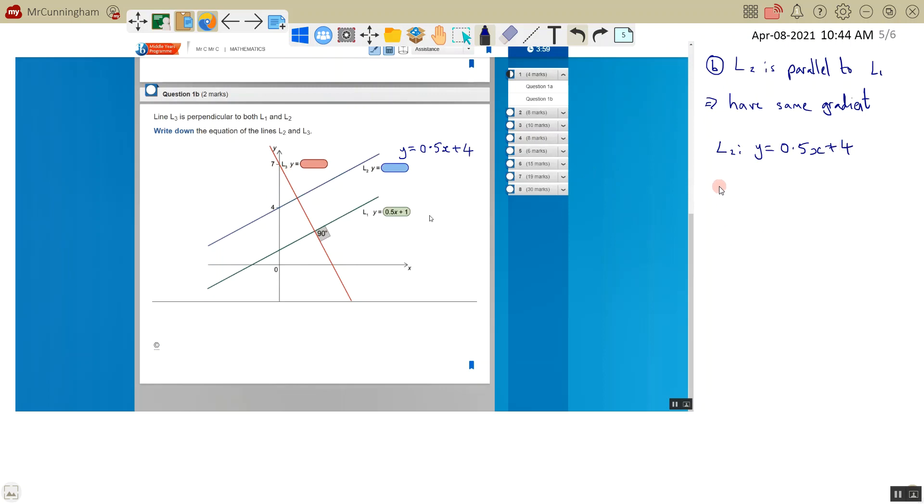Now L3 is perpendicular, and we know that the gradient of perpendicular lines when multiplied together gives us -1. So the gradient of L3 multiplied by the gradient of L2 has to equal -1. The gradient of L3 is what we're trying to figure out. We know the gradient of L2, which is the same as L1, is 0.5. So in order to find out the gradient of L3, we divide both sides by 0.5.